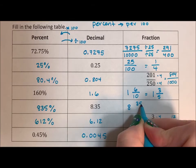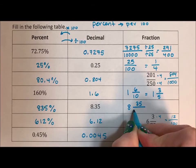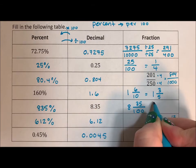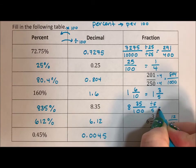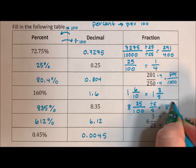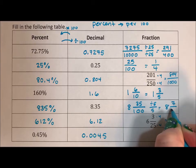8 and 35, there are 2 decimal places, so 2 zeros. That ends in a 5, so I can take a 5 out of top and bottom, which is 8 and 7 over 20.